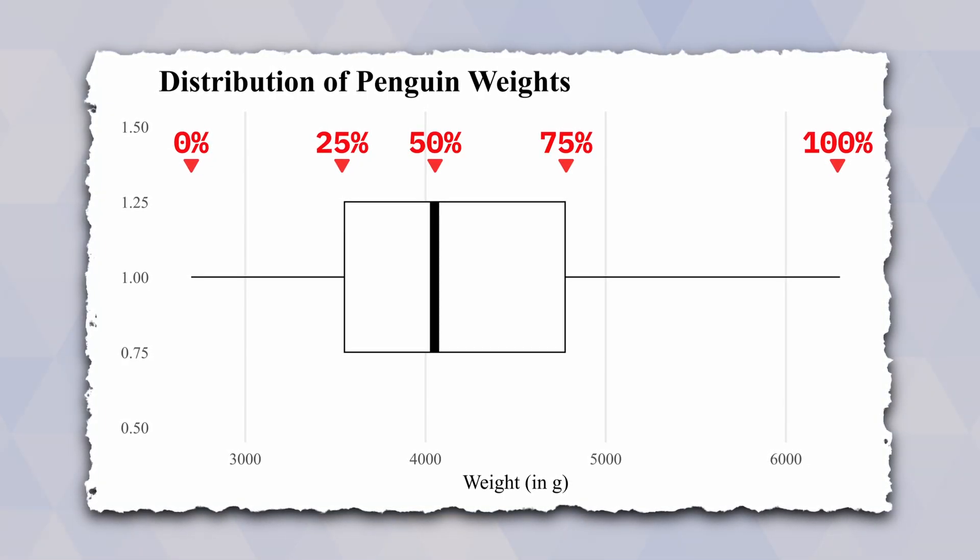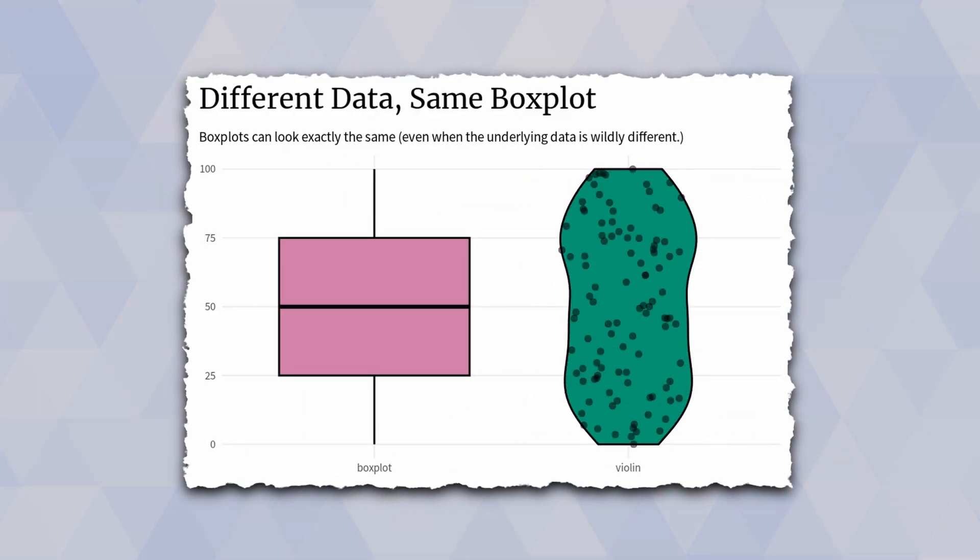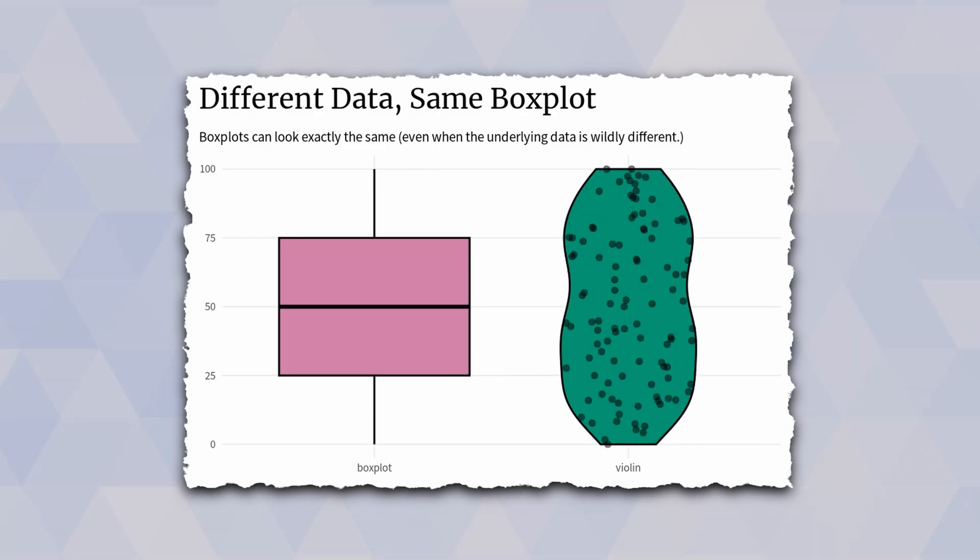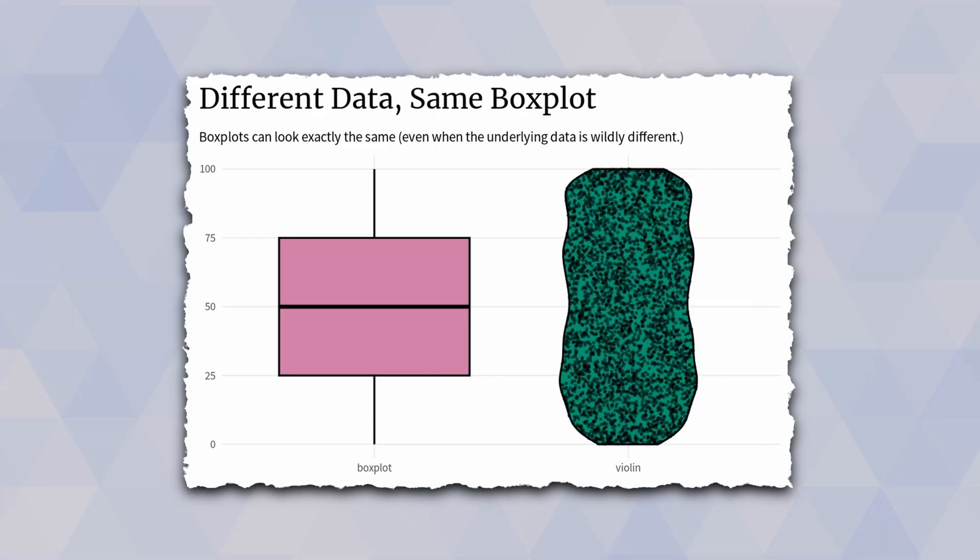And finally, you can highlight the median. The problem with that is that the underlying data can look wildly different, even if two boxplots are the same.